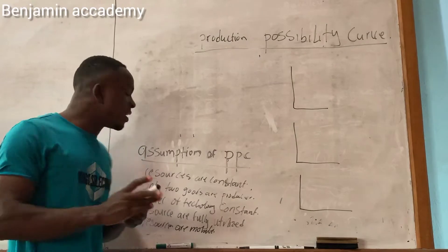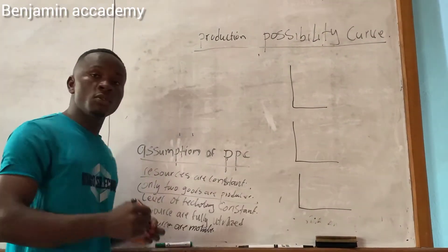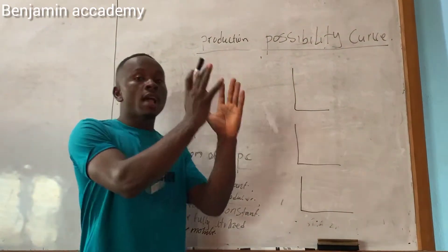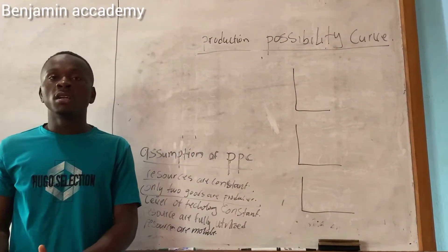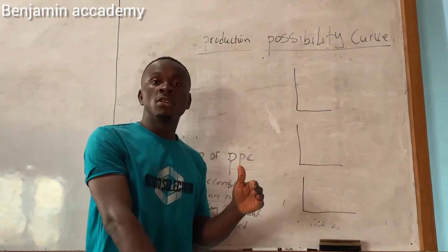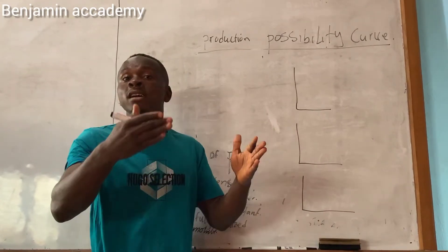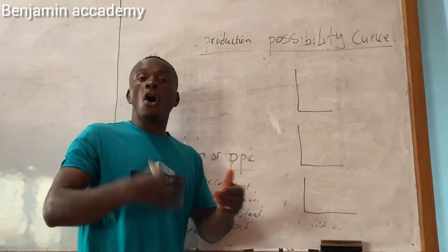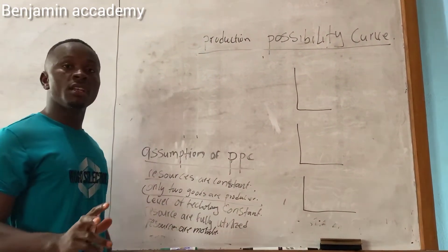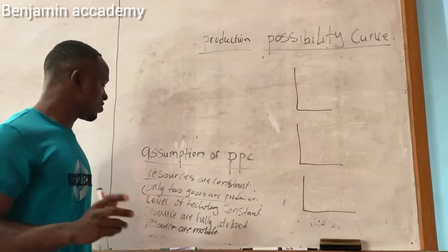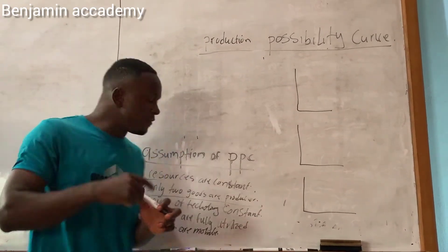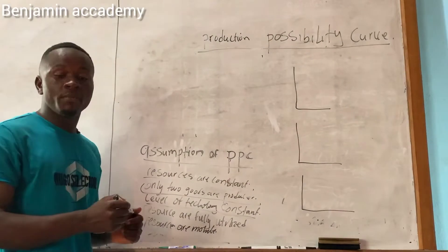The second assumption is that only two goods are produced — the country can be producing capital goods and consumer goods, or good X and good Y. The third assumption is that the level of technology must be constant.